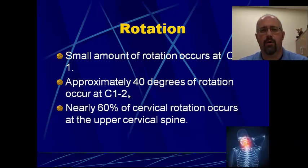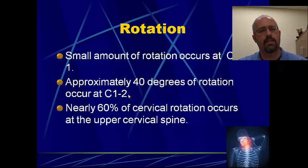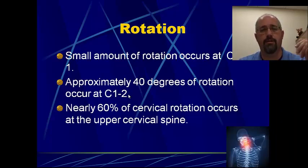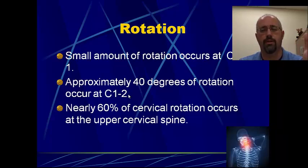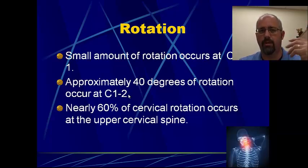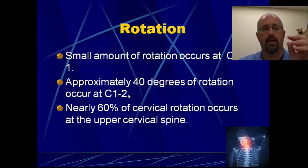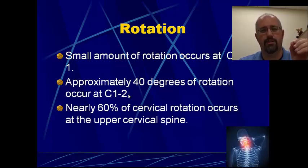Somewhere around 45 degrees of flexion extension takes place — about 25 degrees between C0 and C1, about 20 degrees between C1 and C2. When it comes to rotation, there's a small amount at C0-C1, but most of it — about 40 degrees of rotation — occurs at C1-C2. So about 60% of all the rotation that occurs in the neck occurs at this region. For a patient to get full rotation of the neck, 60% of that movement comes from C0-C1 and C1-C2. So if a patient comes in whose neck is stiff and they've lost the ability to rotate, we've got to start thinking about how much loss has occurred at the C1-C2 level, and we might need to treat not just the symptomatic area further down but also go back up and check C1 and C2.